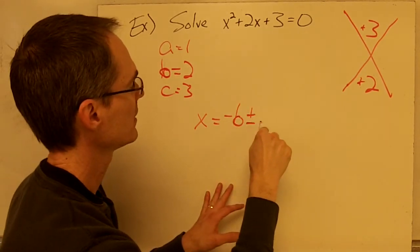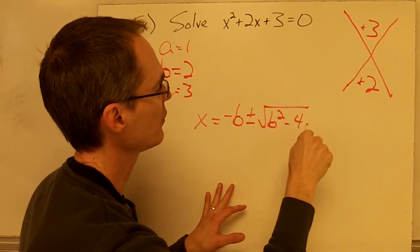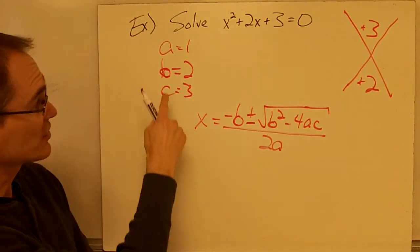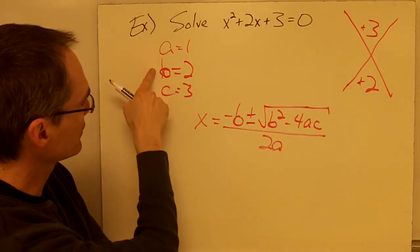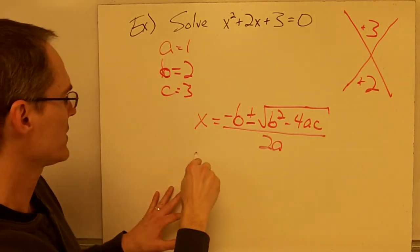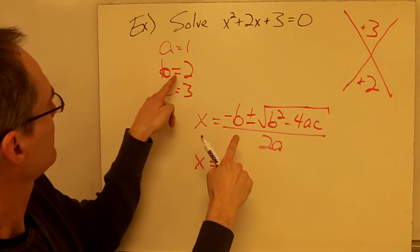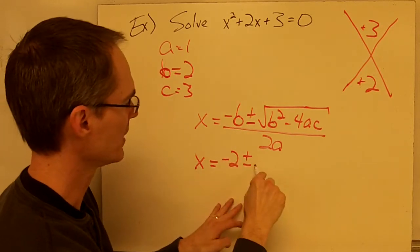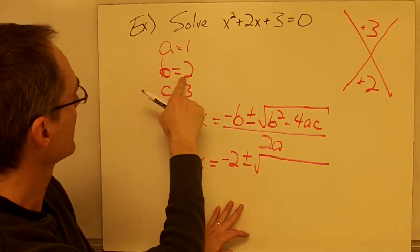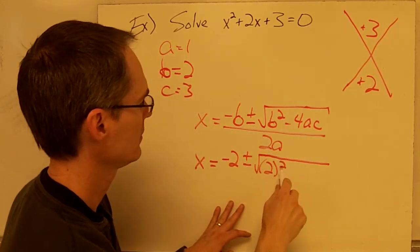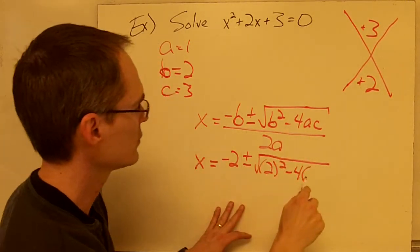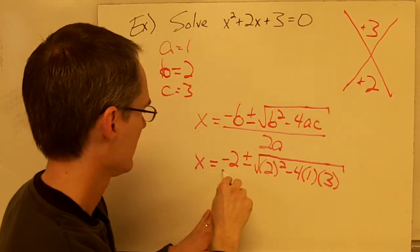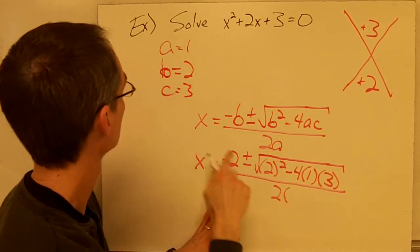The quadratic formula is: negative b plus or minus the square root of b squared minus 4ac, all divided by 2a. So plugging in my values, x equals negative 2 plus or minus the square root of 2 squared minus 4 times a — which is 1 — times c — which is 3 — all divided by 2 times a, which is 1.